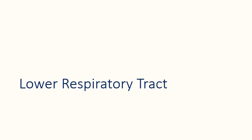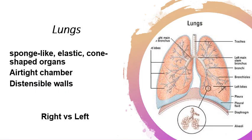For the lower respiratory tract, the lungs are sponge-like, elastic, cone-shaped organs that can expand. Importantly, the lungs are an airtight chamber — if air is abnormally present in other parts or outside the lungs, it can result in lung collapse. The lungs have distensible walls. The right lung is composed of three lobes, while the left lung is narrower, smaller, and contains only two lobes.